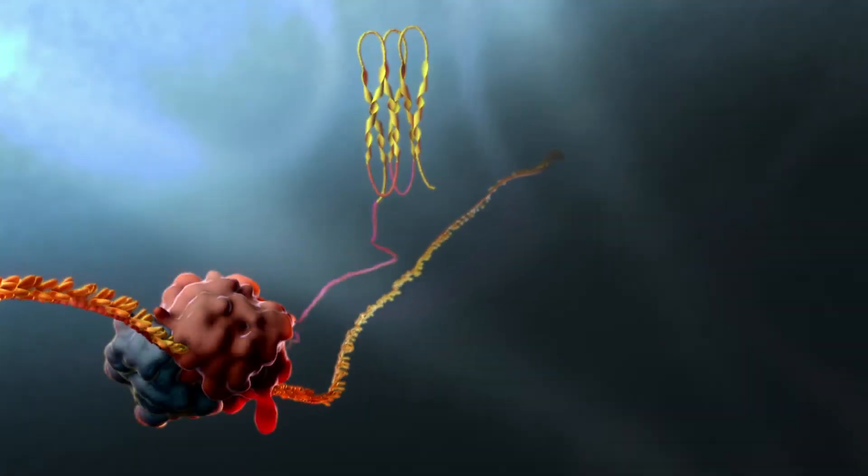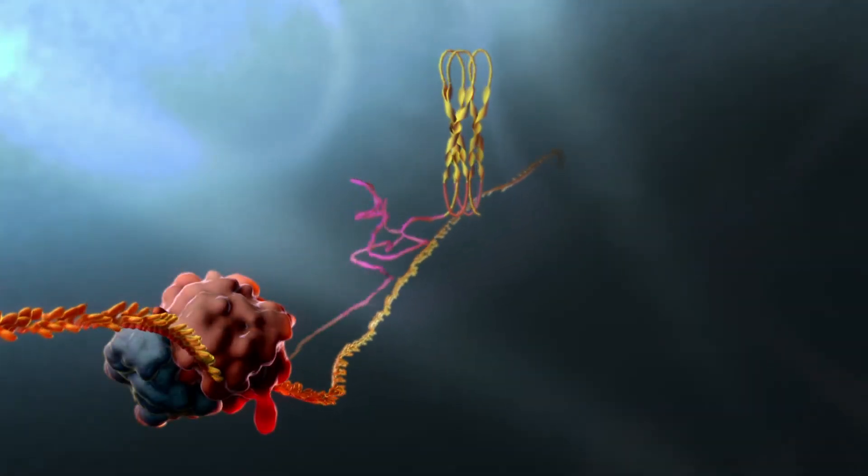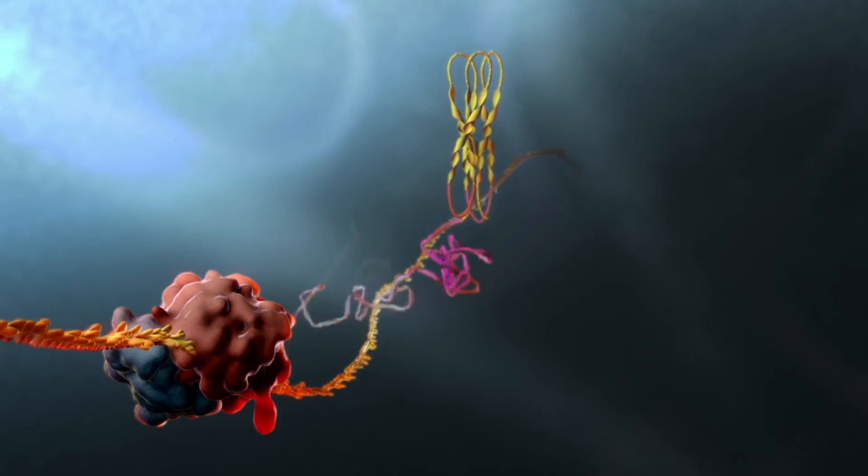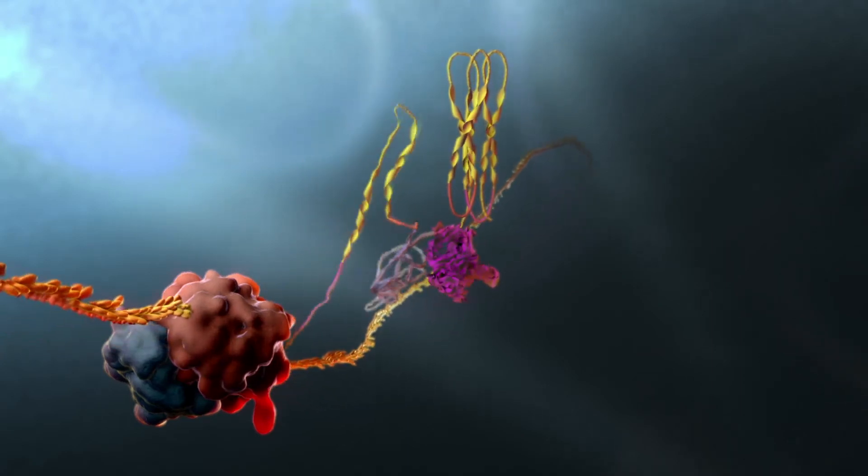When making a normal CFTR protein, messenger RNA, the long strand at the bottom, holds the genetic code and gives instructions for how to make the protein.